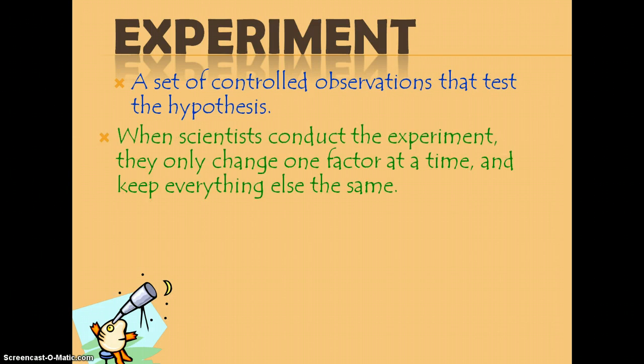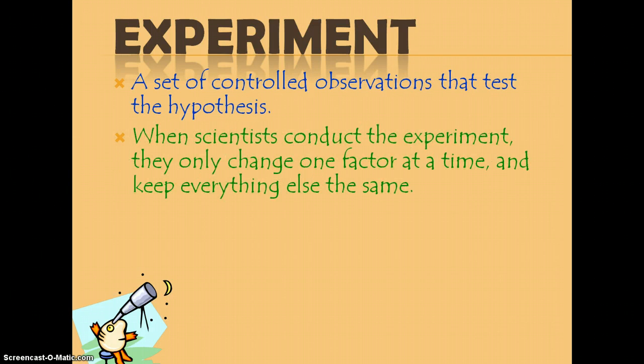Now we're into the experiment. You have a set of controlled observations that are going to test the hypothesis. So you have to have them at a control. When the scientists conduct the experiment, they only change one factor at a time and they keep everything else the same. If you vary more than one thing in an experiment, how do you know what's actually making the difference? Do you smell less like body odor from the new deodorant, or is it because you showered, or you used a different kind of soap in the shower, or you didn't do any activity?